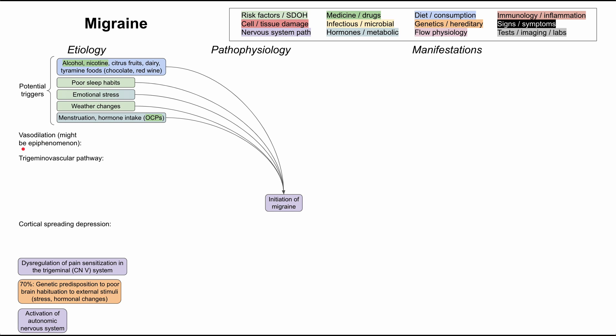One of the older theories for migraine initiation is vasodilation. It's still relevant — there's still a bunch of literature and research on it — but we're not exactly sure if vasodilation is the cause of the migraine or if it's an epiphenomenon, something that occurs concurrently with the migraine. The idea is that dilation of intracranial blood vessels activates the meningeal nociceptors — pain receptors — that initiate the migraine.